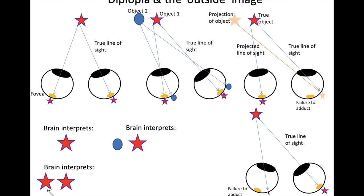And it's hitting it at a place which the brain interprets as having come from an object just lateral to the red star, the true fixated object. This is the projected line of sight. So it's all to do with projected line of sight. Whether it's an abduction failure or an adduction failure, or a depression or elevation failure, or an intorsion or extorsion failure...